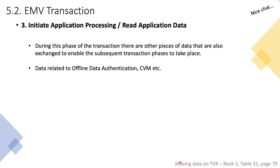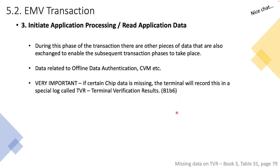There are additional pieces of data that are exchanged beyond the AFL, and this data relates to offline data authentication, CVM, and so on. Important to note: if during this exchange of data certain chip data is missing, the terminal will record this in a special log called TVR. TVR stands for Terminal Verification Results and it is a very important piece of information during an EMV transaction.